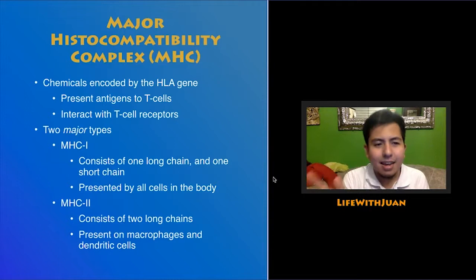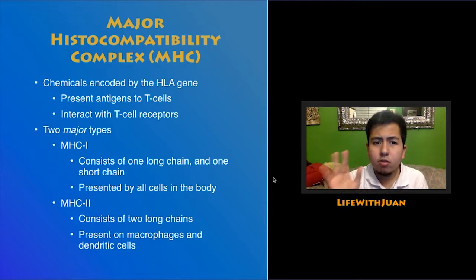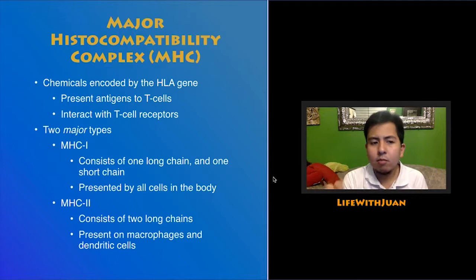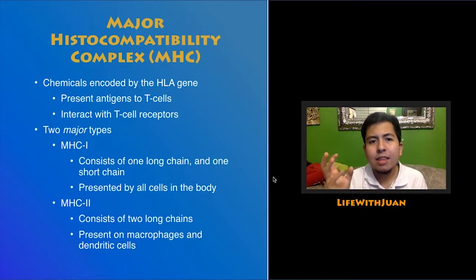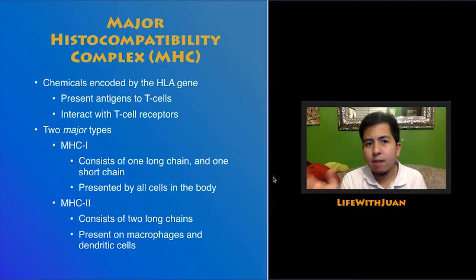The MHC complex is important for binding to T cells and presenting antigens. There are two major types of MHC, or major histocompatibility complex. MHC1 is presented by all cells in the body; it consists of one long chain and one short chain, and when a cell is corrupted, it presents corrupt self-antigens to the cytotoxic T cell. MHC2 is present on macrophages and dendritic cells, consists of two long chains, and presents viral or bacterial antigens after the macrophage phagocytoses and breaks them down into particles, placing them on MHC2 for T cell recognition.